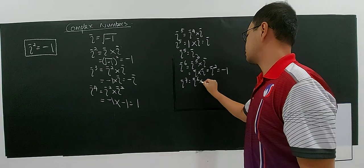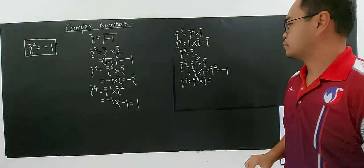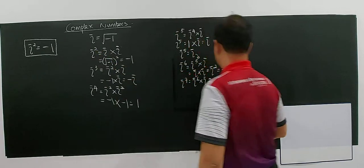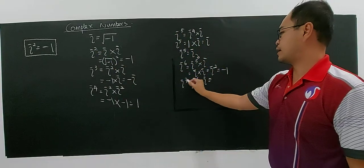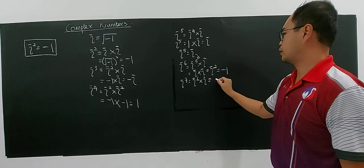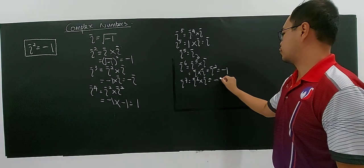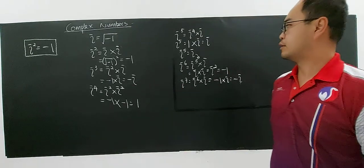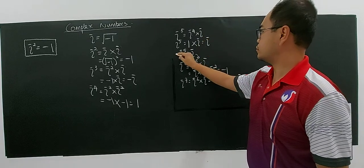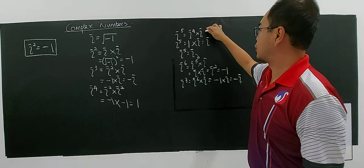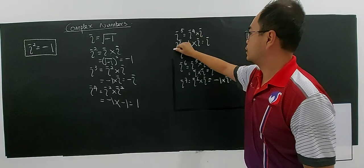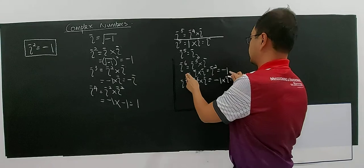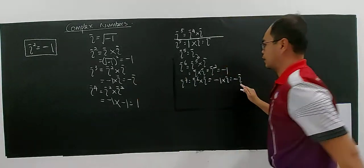For i power seven: i power six multiplied by i. i power five is i, so i times i is i squared which is negative one. So i power seven is i power six times i — i six is negative one, multiplied by i gives negative i. You can see they repeat: starting from i power five, the pattern is i, negative one, negative i, and it repeats again.